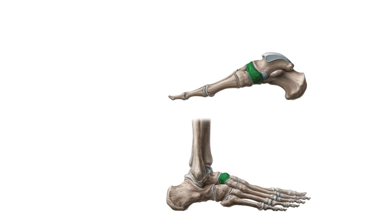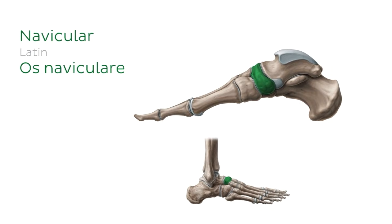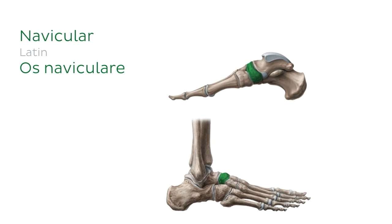The final bone we'll identify today is the navicular bone, which you can see highlighted in green in both images. In this medial view of the foot, we can see the navicular more clearly. It lies on the medial side of the foot, proximal to the three cuneiform bones, and we can see it articulating with the talus as it sits directly anterior to it. Similar to the calcaneus, the navicular is not directly involved in the ankle joint but serves as an attachment site for ligaments that support the ankle.